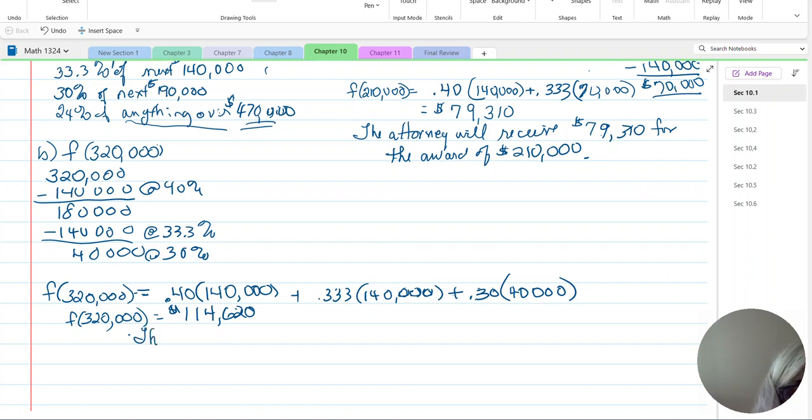So the attorneys earned $114,620 for an award to client of $320,000. Something to that effect.